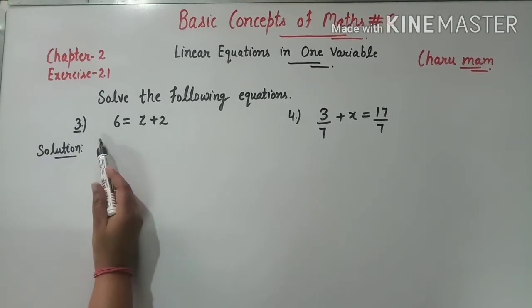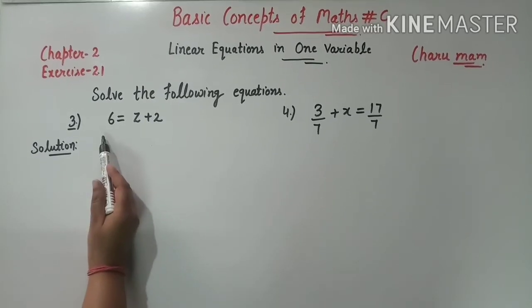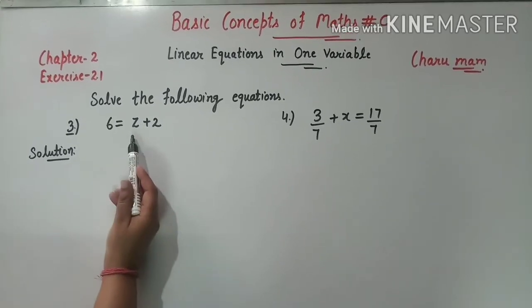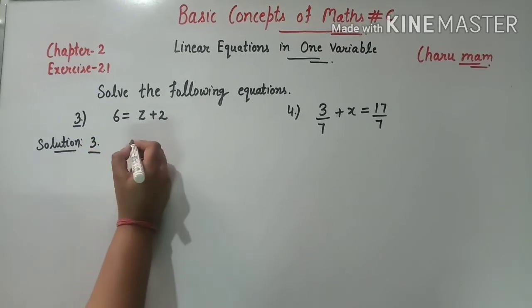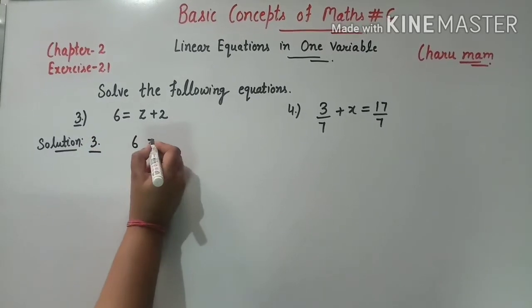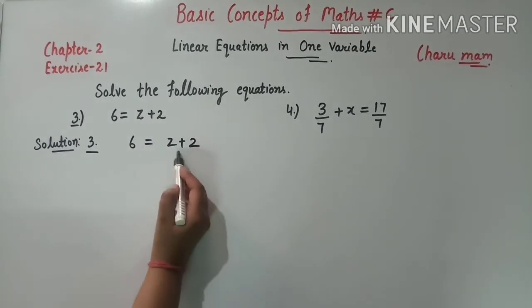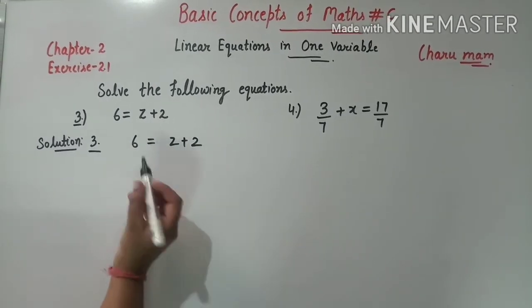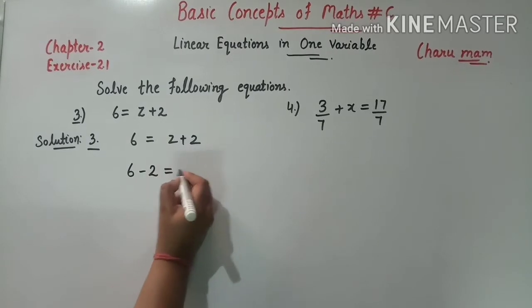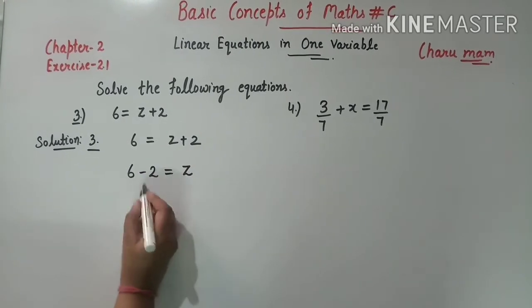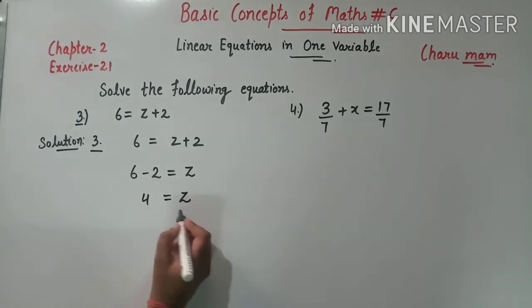Question 3: 6 equals z plus 2. तो हमें z की value find करनी है. Plus 2 left side जाएगा तो sign change होगा: 6 minus 2 equals z. Minus करेंगे तो 4 आएगा. So z की value है 4.